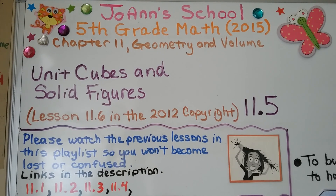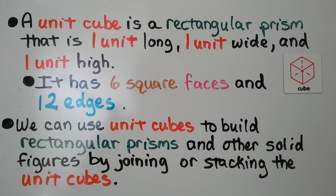Lesson 11.5: Unit Cubes and Solid Figures — this is 11.6 in the 2012 copyright version of the textbook. A unit cube is a rectangular prism that is one unit long, one unit wide, and one unit high. It has six square faces and twelve edges. We can use unit cubes to build rectangular prisms and other solid figures by joining or stacking them.